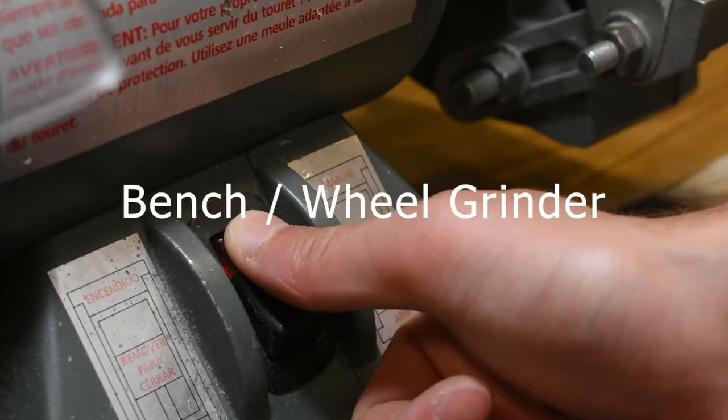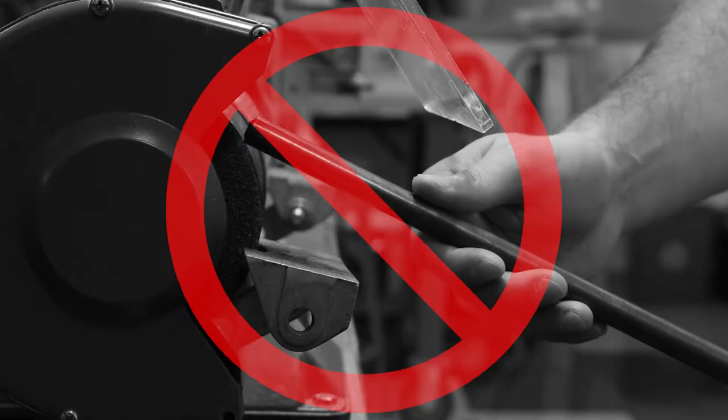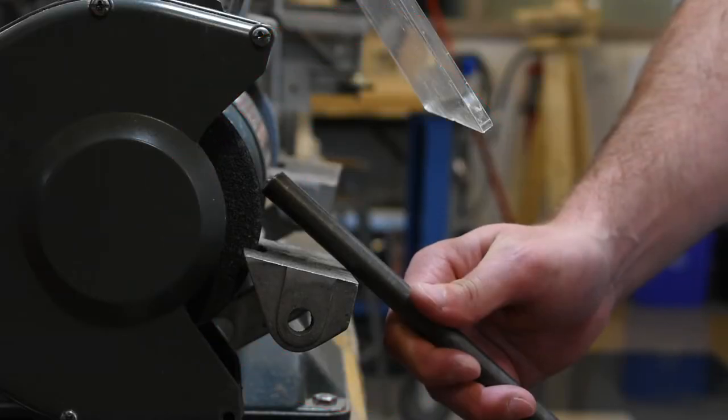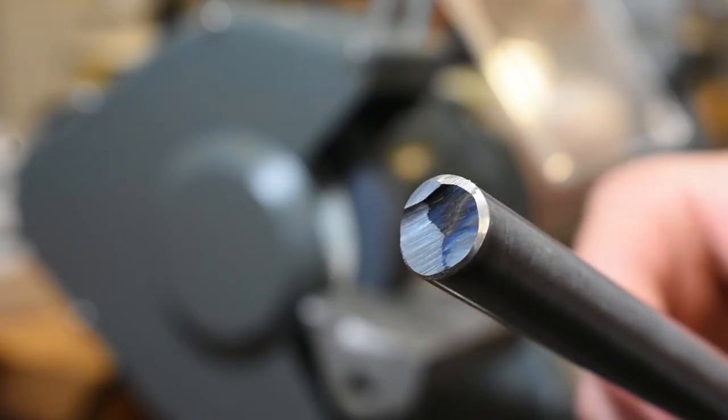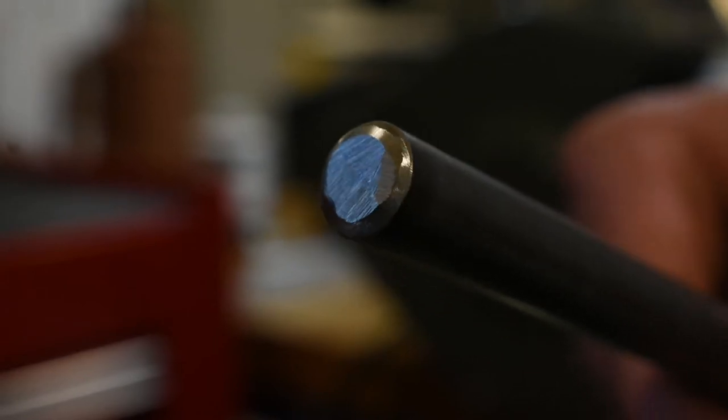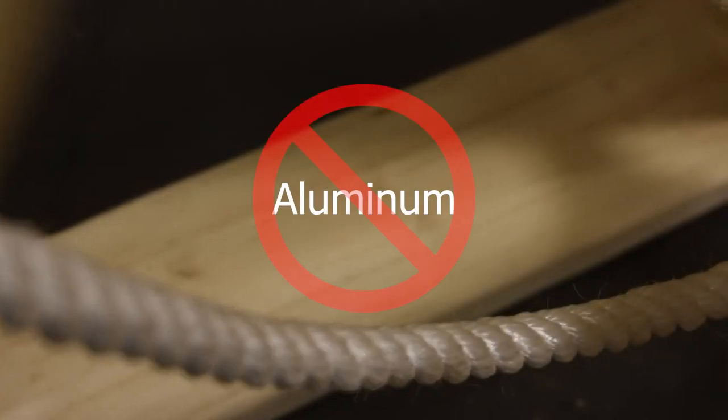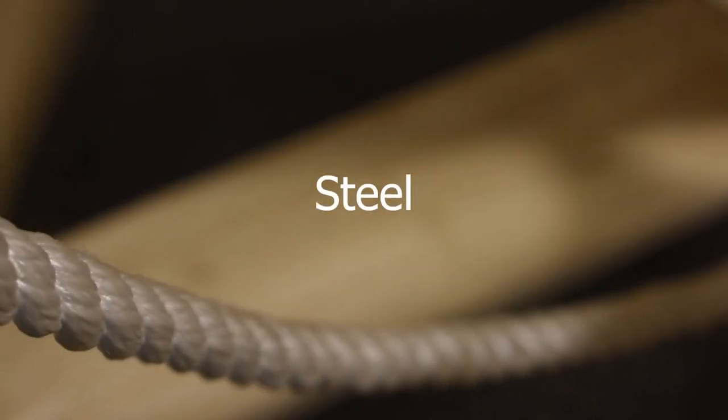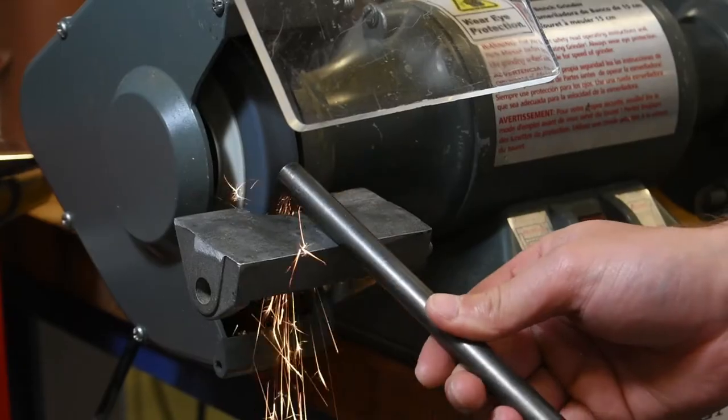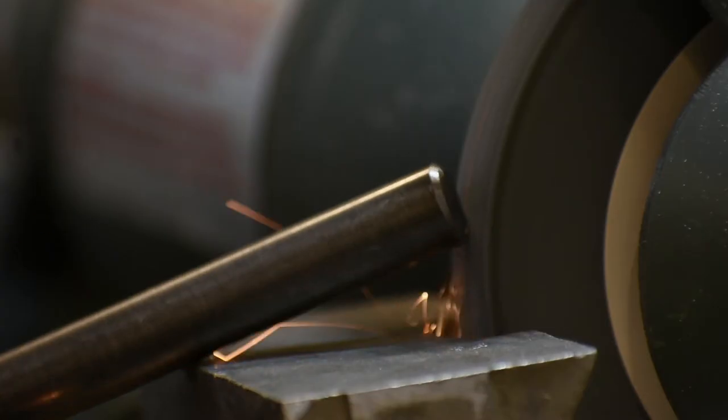The bench grinder is used to grind down rough edges on steel parts. It can also be used to sharpen steel blades and tools. No aluminum can be used on this machine, only steel. It is normal for sparks to fly off when grinding steel, so always wear your safety goggles.